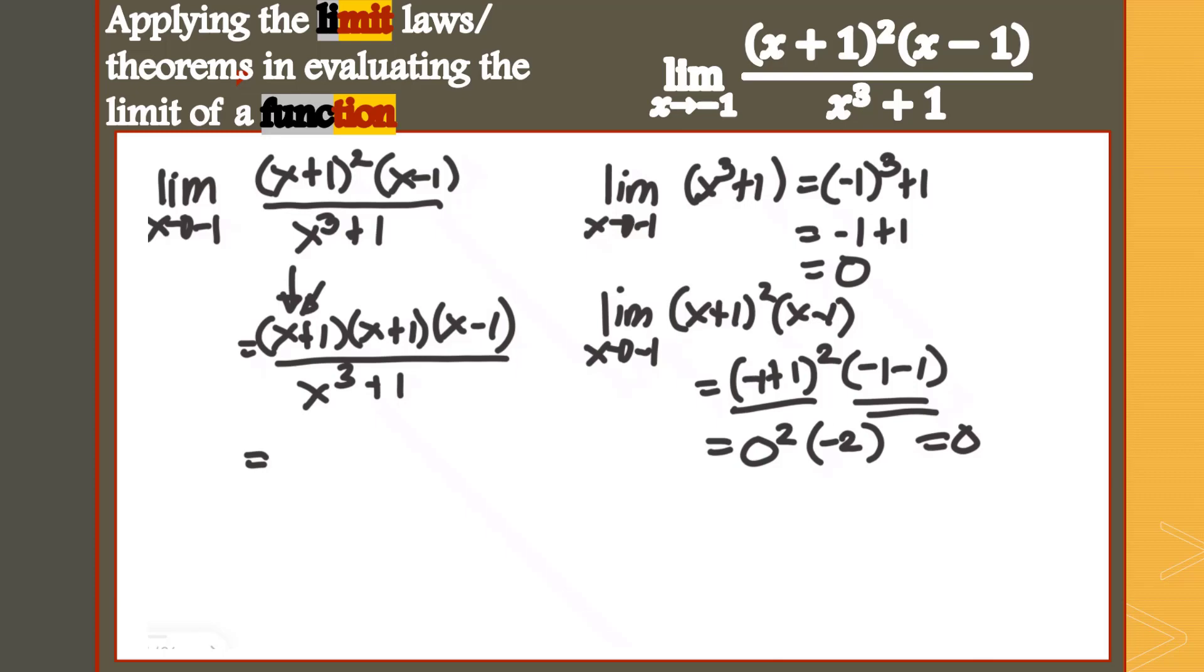What we could do is actually factor our denominator. Our denominator is the sum of two cubes. x³ is a perfect cube, 1 is also a perfect cube. If you can still remember, the factor of x³+1 can be broken into a binomial expression: x plus 1, the cube root of the first term and second term with the sign as positive, times the square of the first term, the square of the last term, and simply multiply the two. So plus 1x, or simply x plus 1. That is how we factor our sum of two cubes.